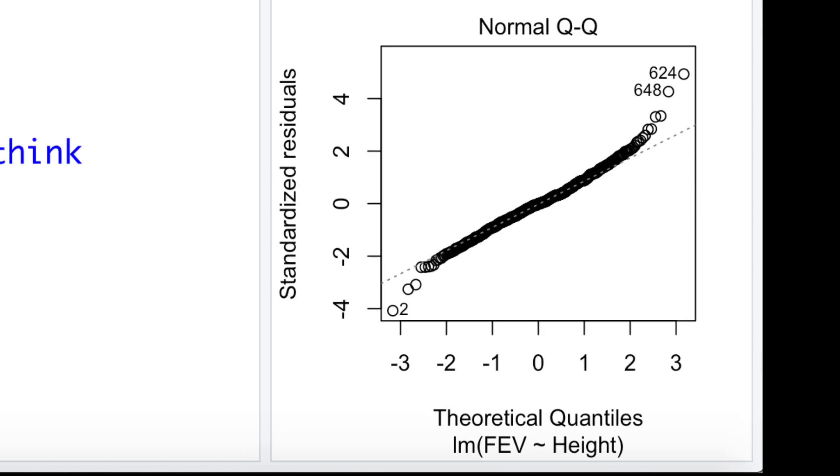We can also look at the QQ plot here. This helps us check normality: if points fall roughly on this diagonal line, the data looks normal enough. We also talked a bit about how the normality assumption is not such a big or important assumption, provided we have a large enough sample.